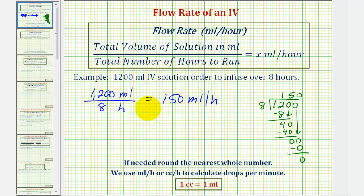These quotients won't always come out perfectly, so if we do have to round, we'll round to the nearest whole number. Let's take a look at one more example where we have to round, and we're going to use this flow rate later to determine the drops per minute.